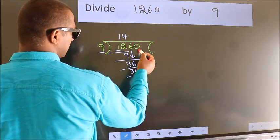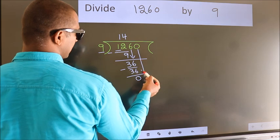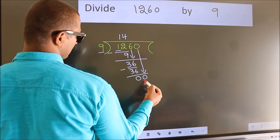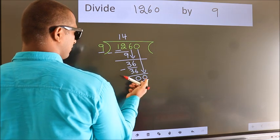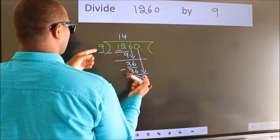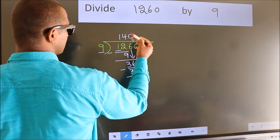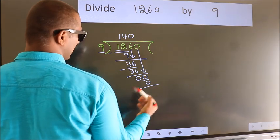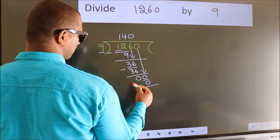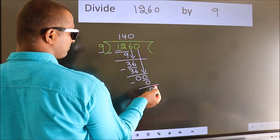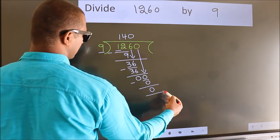After this, bring down the beside number. So, 0 comes down — so we have 0. When do we get 0 in the 9 table? 9 times 0 is 0. Now we subtract. We get 0. No more numbers to bring down, so we stop here.